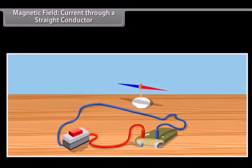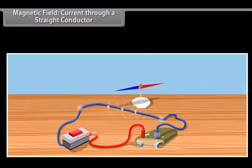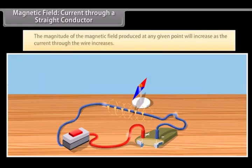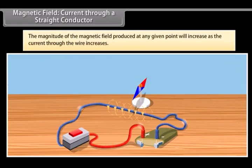Magnetic field current-carrying conductor. As you have seen earlier, let us see what happens when we change the current that is passing through the wire. The effect on the compass also varies. So, if you increase the current, the deflection of the needle of the compass will increase. From this we know that the magnitude of the magnetic field produced at any given point will increase as the current through the wire increases.